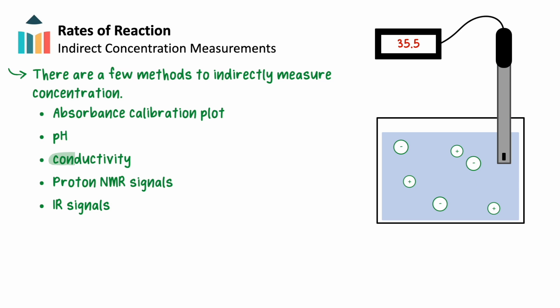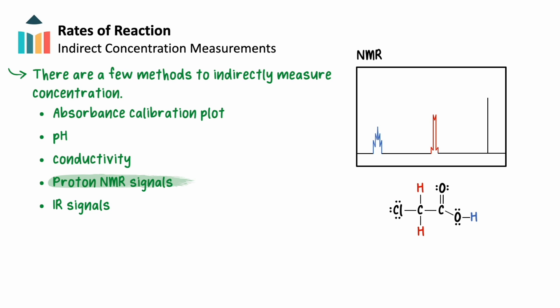Or, if ions are formed or used up in the reaction, the change in conductivity can be measured using a conductivity meter. A third example is that if the reactants and products contain hydrogen atoms, the concentrations can be calculated using the proton NMR signal intensities.